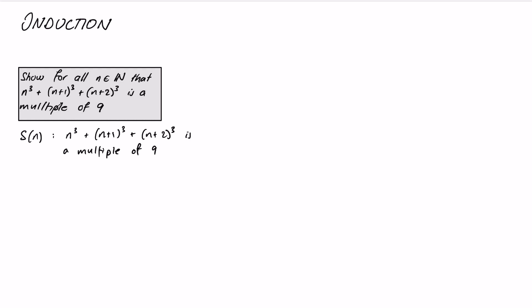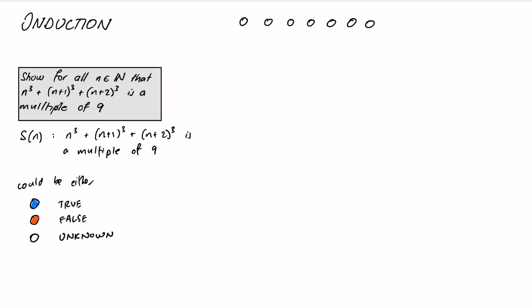S(n) can have three different states: it could be true — let's colour that in blue — or it could be false — we'll go with orange — or it might just be the default state where we don't actually know. You can visualise this as a whole lot of circles representing S(1), S(2), S(3), S(4), and so on. At the moment we don't really know if any of these are true or not, so we represent them by open circles.